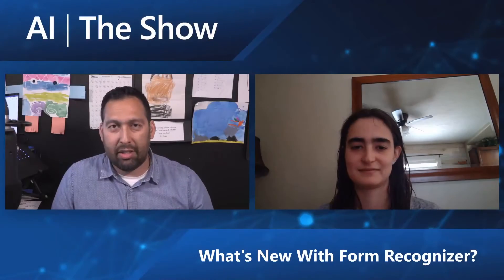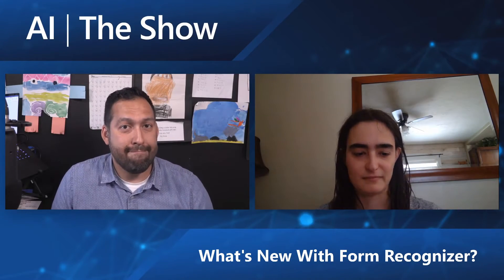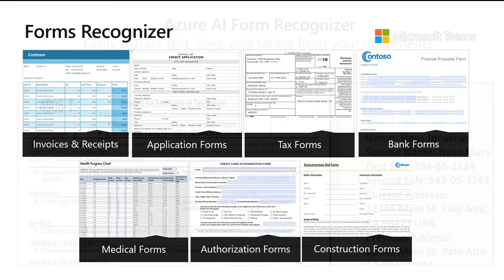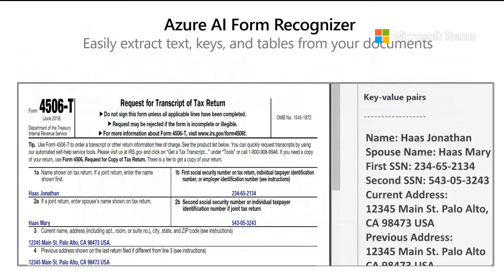For those that don't know anything about Form Recognizer, Form Recognizer is a cognitive service designed to let you extract structured content from forms — all kinds of forms. What you get out of Form Recognizer are key-value pairs from an image of a form or a PDF. For example, you'd extract things like the name, the social security number, the spouse's name, address, etc., and put that into a database or an RPA system.